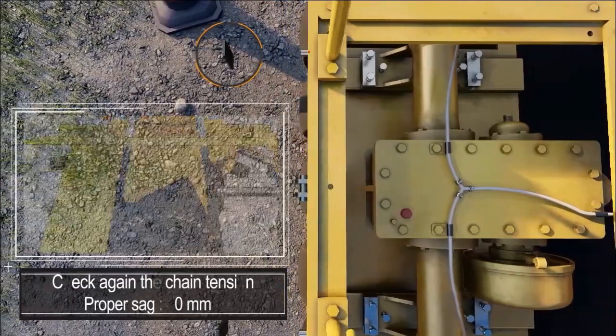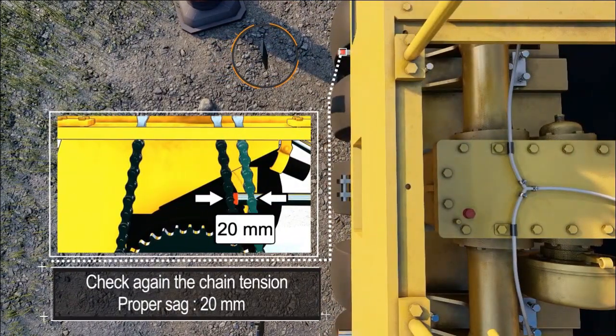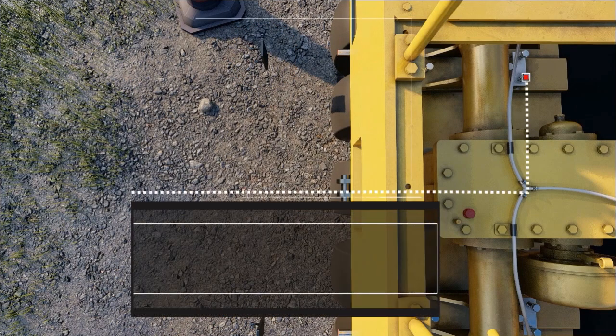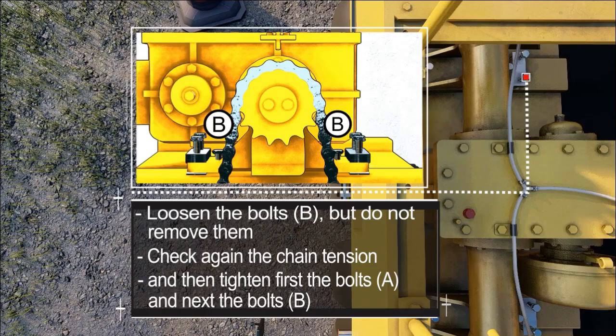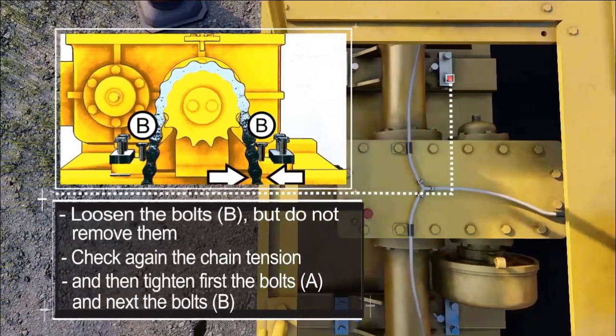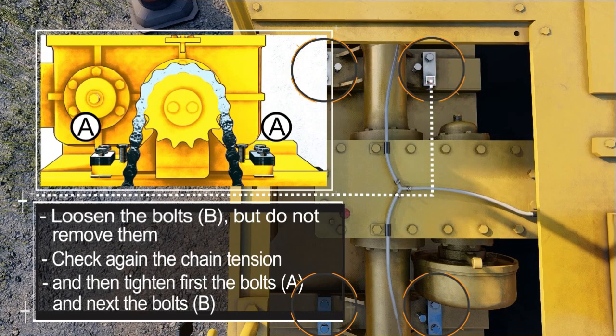Check again the chain tension, pop a sack 20mm. Loosen the bolts D but do not remove them. Check again the chain tension, and then tighten first the bolt A and next the bolts B.